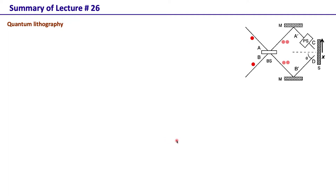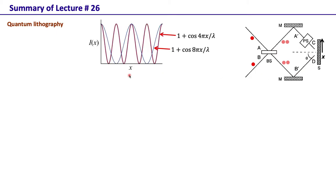Before we get started with today's lecture let's look at what we did last time, in which we looked at two applications of quantum information. One is quantum lithography. In quantum lithography one utilizes the Hong-Mandel effect. In the Hong-Mandel effect we have two photons coming at a beam splitter, getting bunched and then going either in one direction or the other. Using such a state, one can write a pattern on a substrate which is twice as dense as with a single photon state or classical light of the same wavelength.